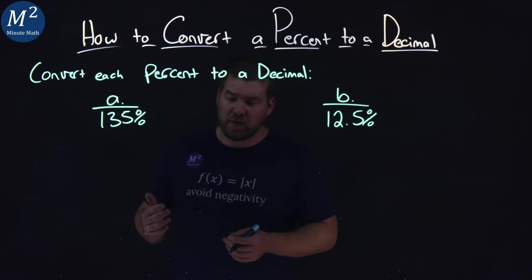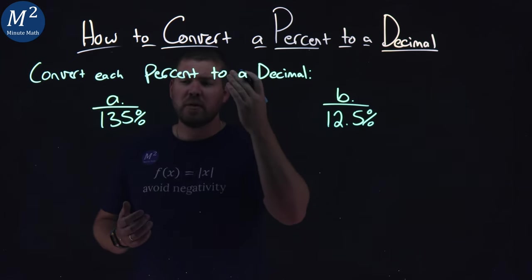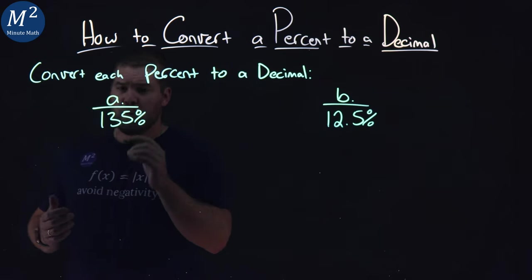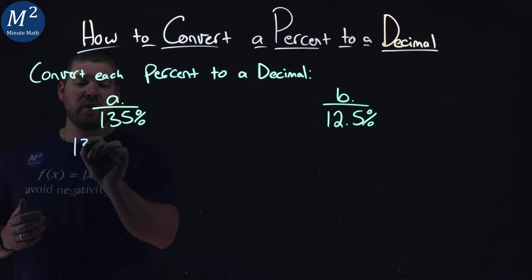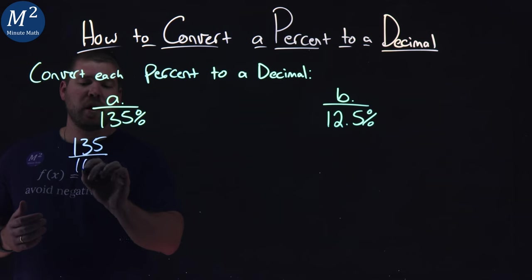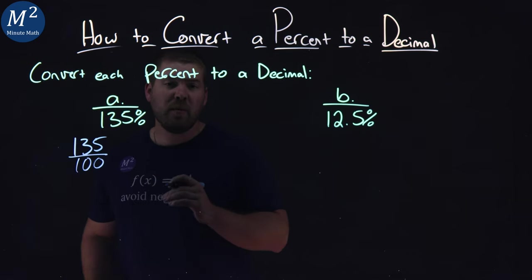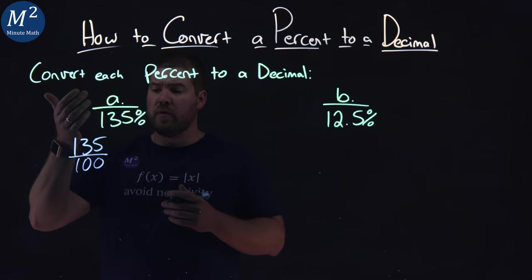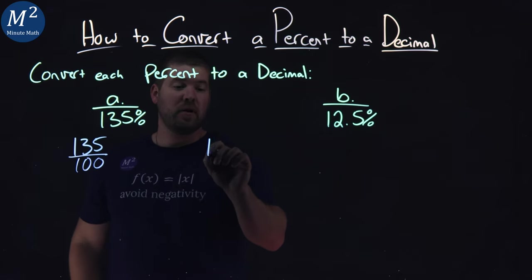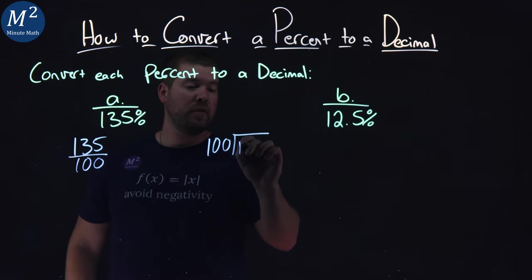The first one here, 135%. We first need to write this as a fraction. 135% is 135 over 100. Then we need to do some long division. We've got a fraction, 135 over 100. That's the same thing as 100 goes into 135.